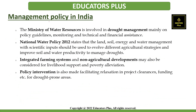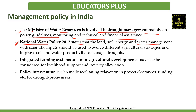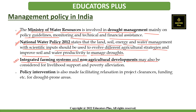Regarding management policy in India, the Ministry of Water Resources is involved in drought management mainly on policy guidelines, monitoring, and technical and financial assistance. The National Water Policy 2012 states that land, soil, energy, and water management with scientific inputs should be used to evolve different agricultural strategies and to improve soil and water productivity to manage droughts. Integrated farming systems and non-agricultural developments may also be considered for livelihood support and poverty alleviation.